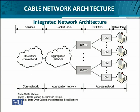DOCSIS — Data Over Cable Service Interface Specifications — defines how data is carried between the cable modem and the cable modem termination system (CMTS). The cable modem talks to its counterpart, the CMTS, which then aggregates various kinds of traffic — voice, video, and data — to their respective networks. For example, PSTNs deal with voice calls, TV broadcasting networks handle television, and ISPs handle internet service provisioning.